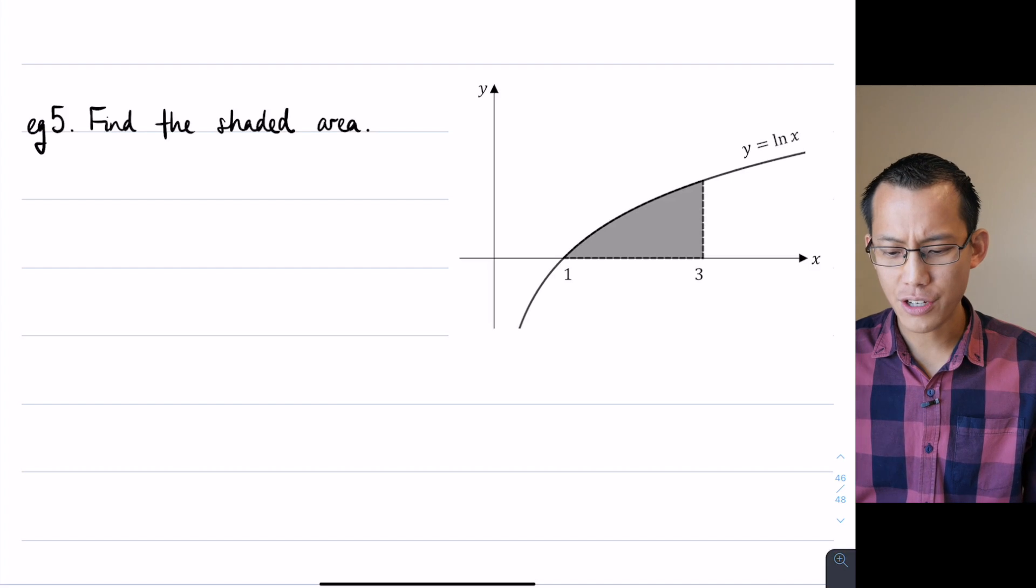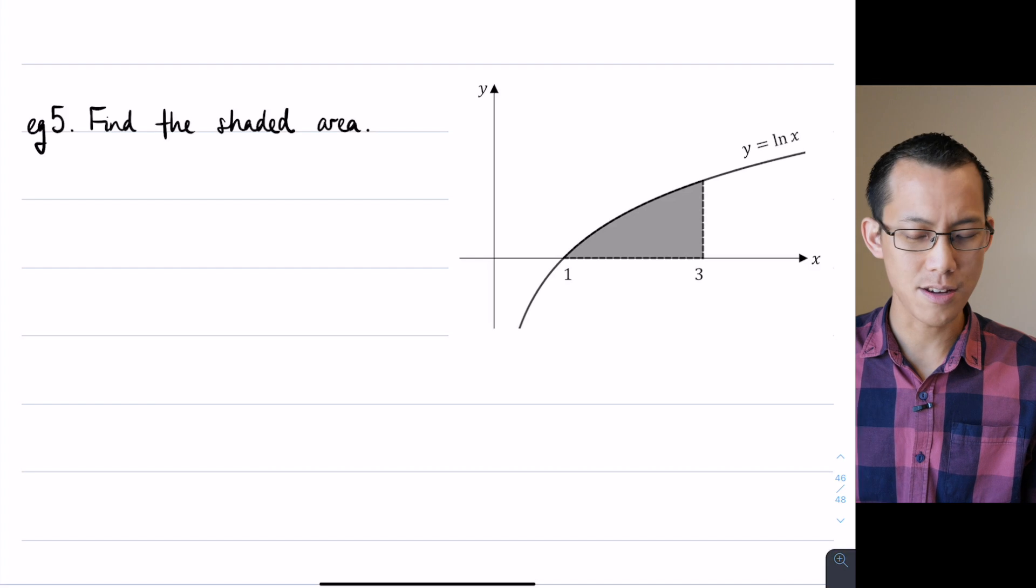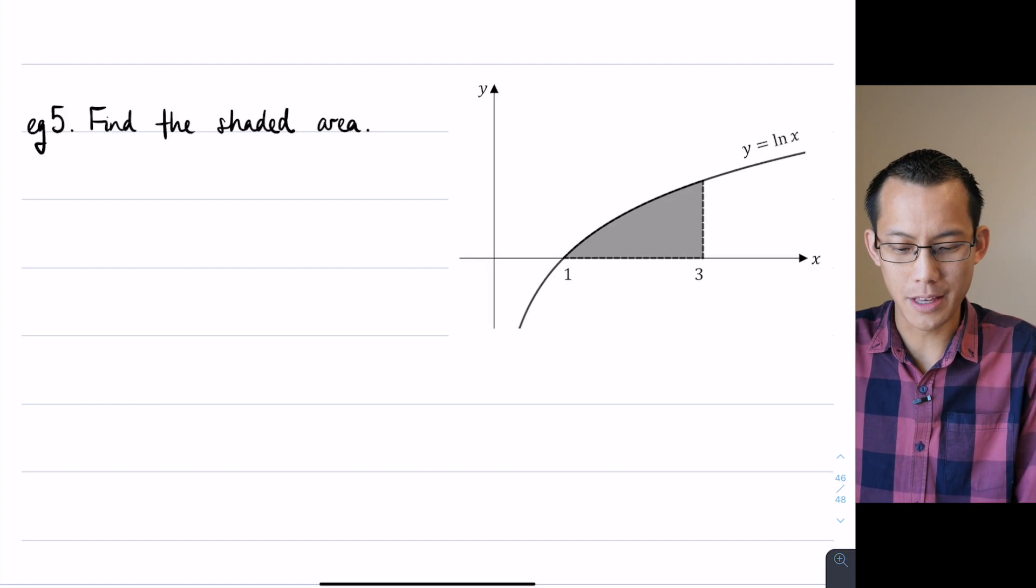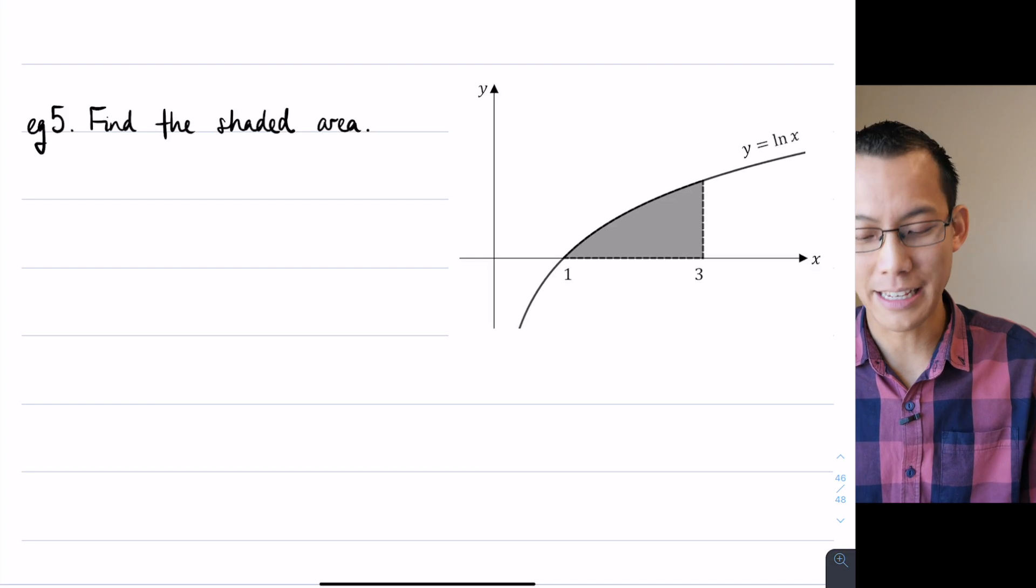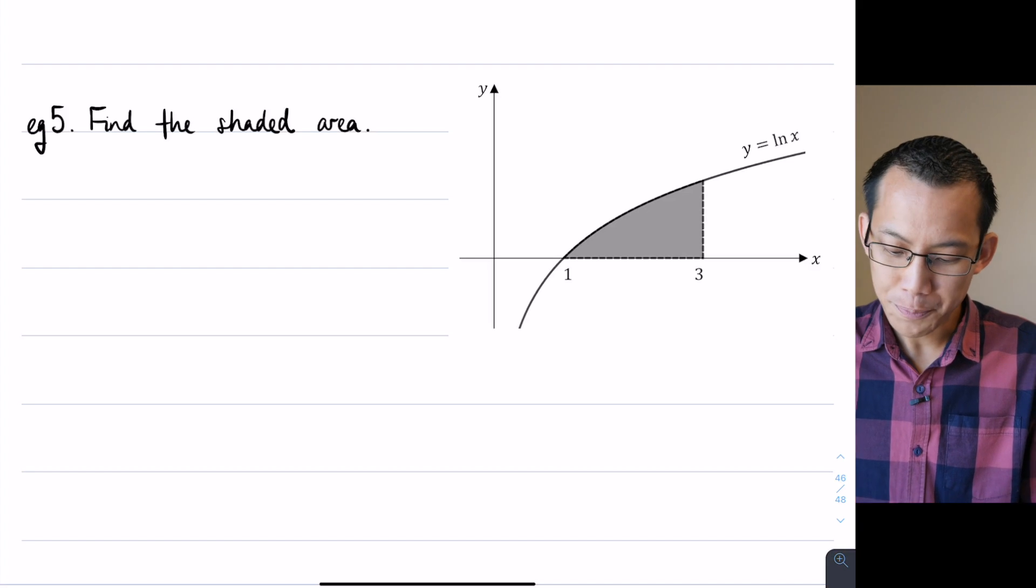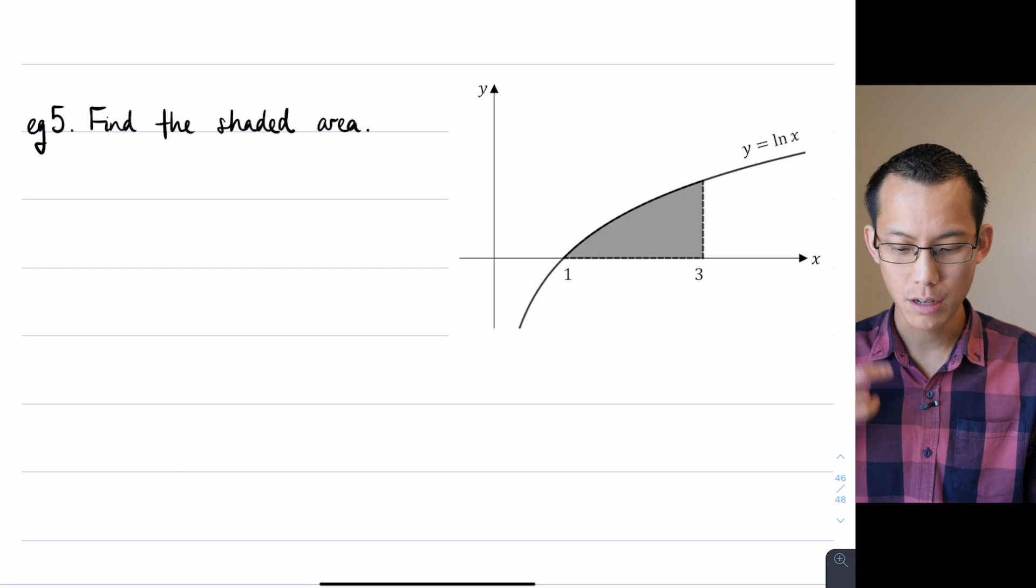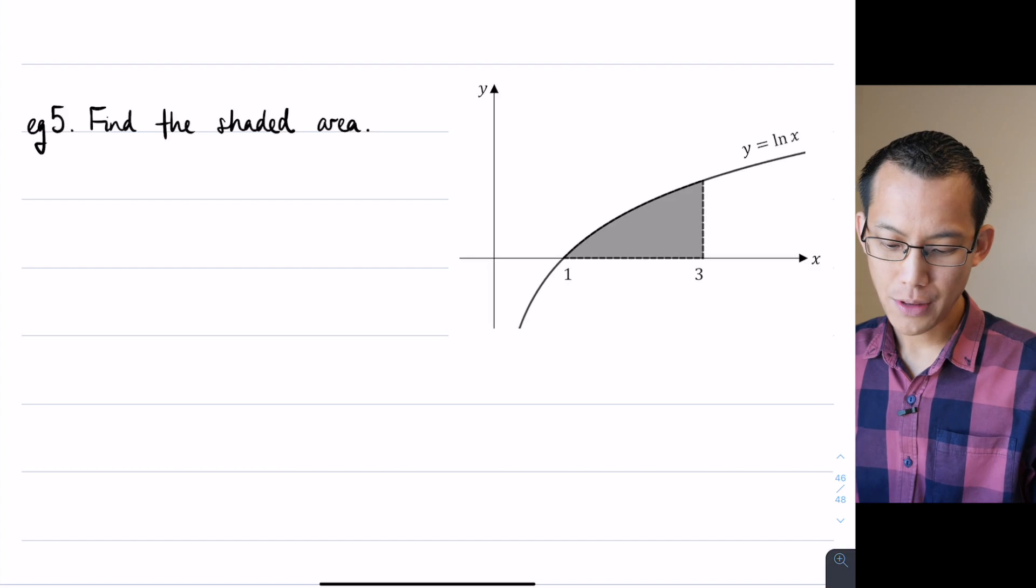This is actually a question from an HSC exam and it's a sneaky one. What do we do with this? It says find the shaded area again and you get given the equation of this curve, y equals the natural log, and then you get given a couple of boundaries, one to three.